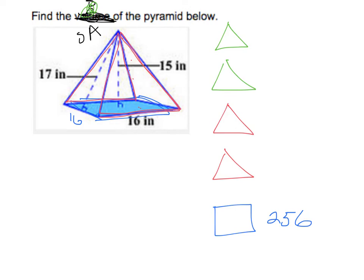So that would be 16 times 17 divided by 2 because, remember, the area of a triangle is base times height divided by 2. And if we do 16 times 17 divided by 2, we get 136. So that other one is also 136.